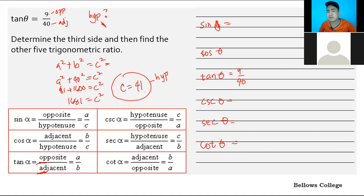Now we can find them. Sine is opposite over hypotenuse, so 9 over 41. Cosine is 40 over 41. Tangent is given. Cosecant is the reciprocal, so 41 over 9. Secant is 41 over 40, and cotangent is 40 over 9. That's how you get the trigonometric ratios when only one ratio is given.